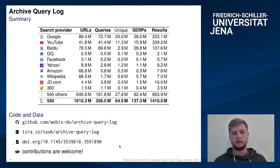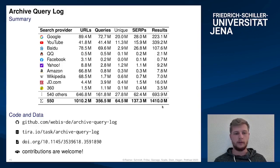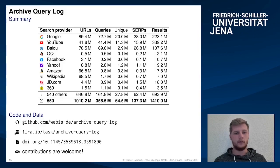To recap, the archive query log is the largest and most diverse query log ever made publicly available. With over 300 million queries, 130 million search engine result pages, and over 1 billion search results, it is on par with large but private commercial logs. Because it is mined from over 500 search engines across two decades, it can be used for all sorts of query log analyses and enables tackling new challenges in IR research. The code is available on GitHub and the dataset on the TIRA platform. Thanks for listening.